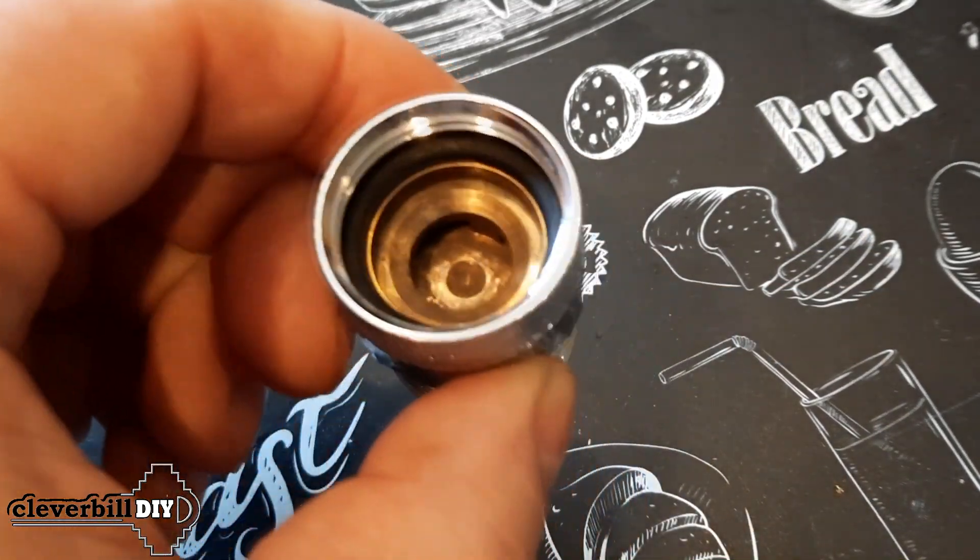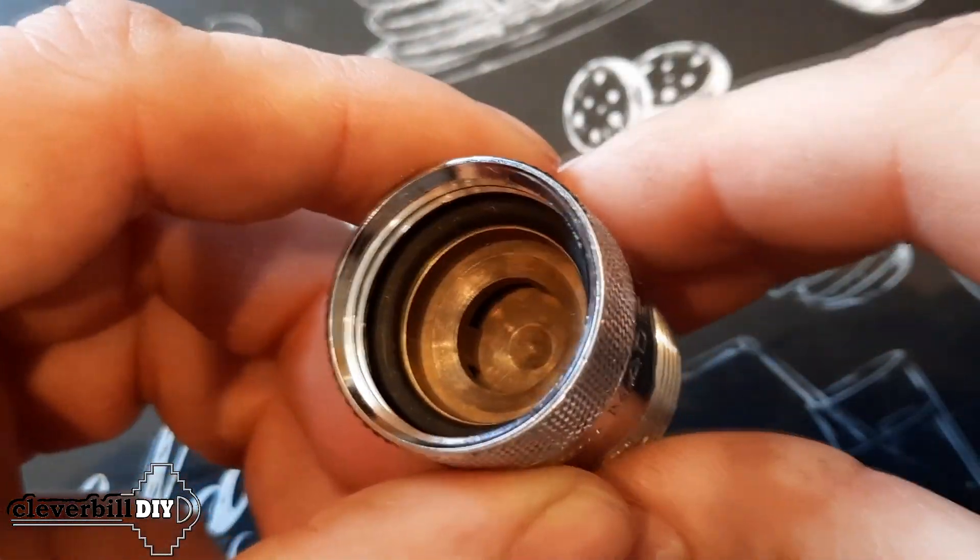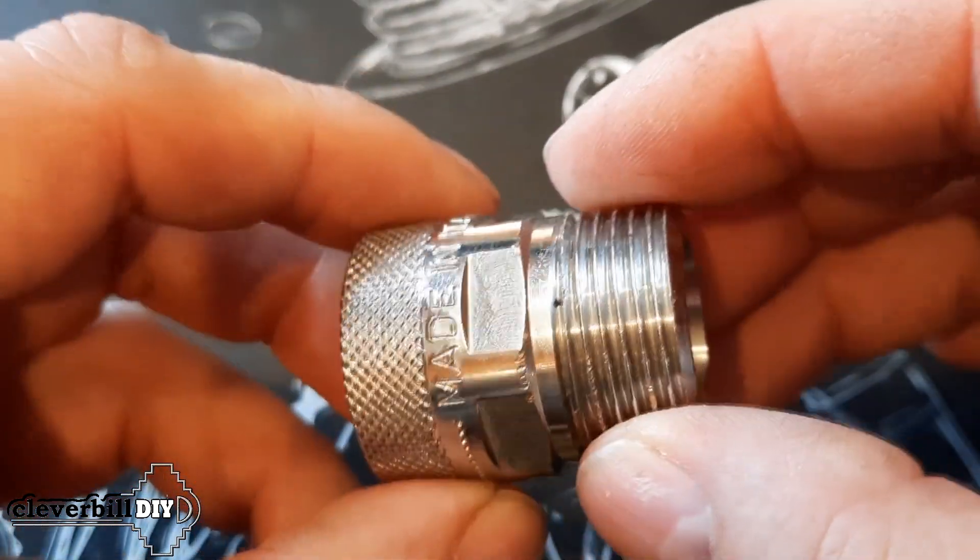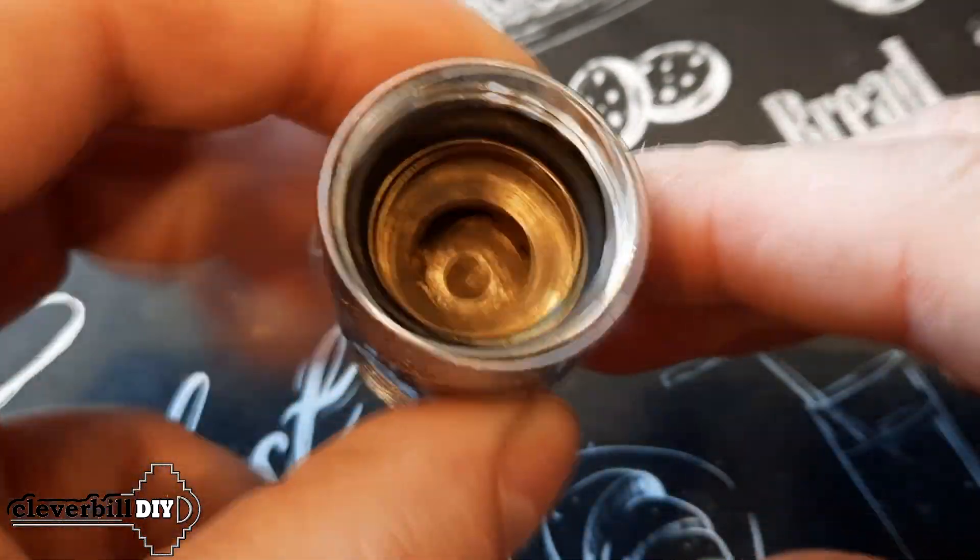This valve is often recommended as leakage protection, claiming that it can be installed in various places in the domestic water supply, for example in front of faucets or inlet hoses of washing machines or dishwashers.